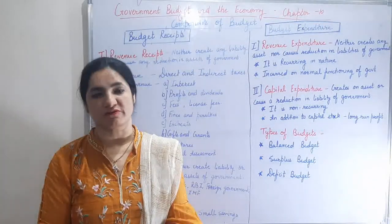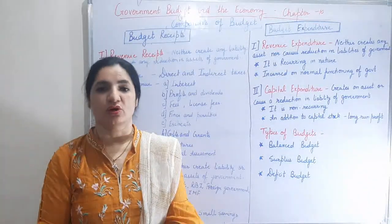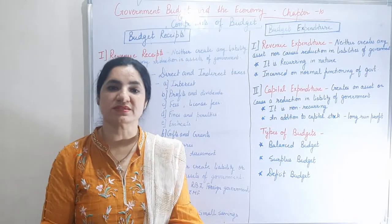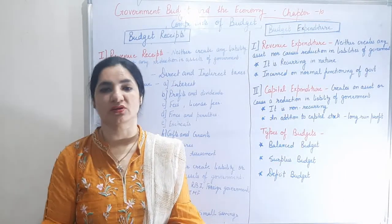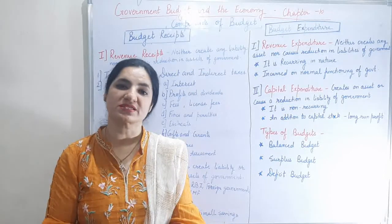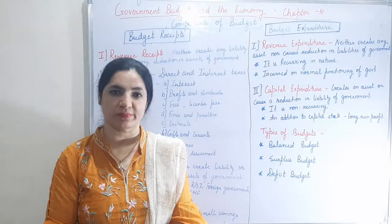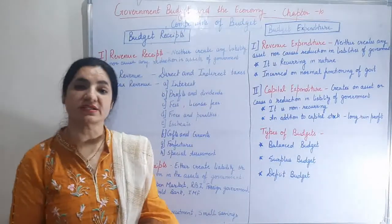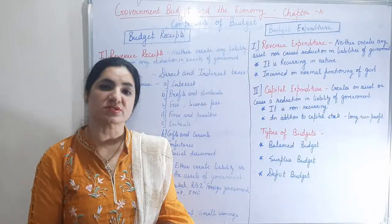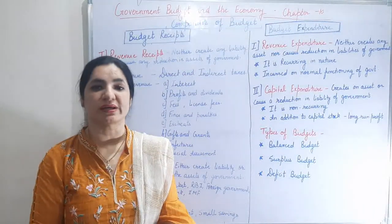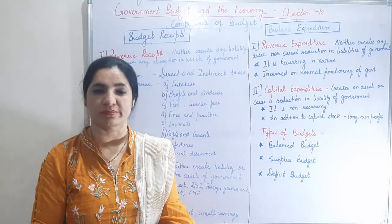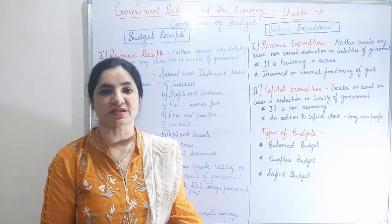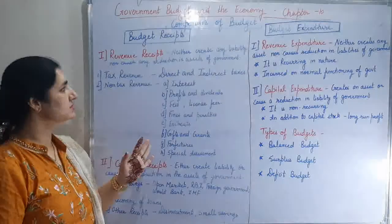Now let us see the components of the budget. Components of the budget can be categorized as per the receipts and the payments — or expenditures — made by the government. First is budget receipts. Budget receipts mean whatever money is received by the government from all sources, which can be categorized under various heads.